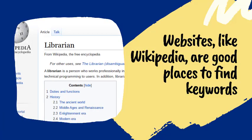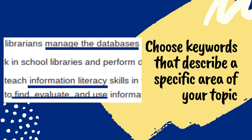Let's look at how we can find keywords using a Wikipedia article. In this example, I have an assignment to find information in the library databases on my perspective career. Using a Wikipedia article, let's find some keywords we can use in our database search. For this assignment, I want to find information about being a librarian in a college library.